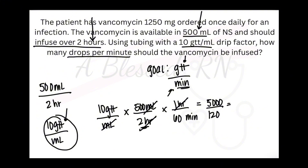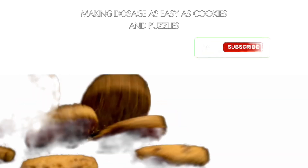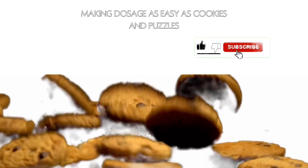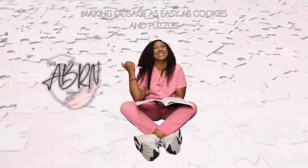We get our answer as 41.6 repeating. Remember, we have to round to the nearest whole number because you can't divide a drip — so 42 drops per minute. Cookies and puzzles! Like, subscribe, and share if this video has helped you. Join my live sessions and let's defeat dosage. Be blessed.